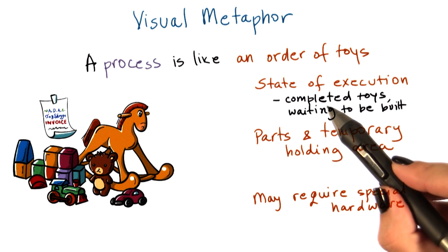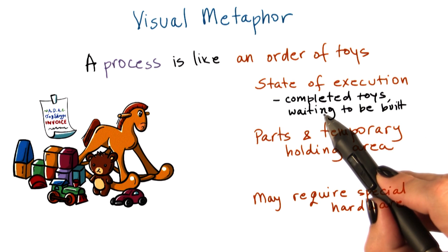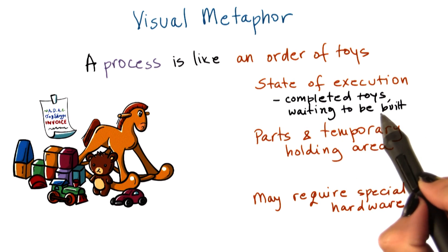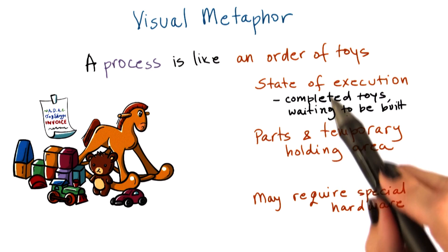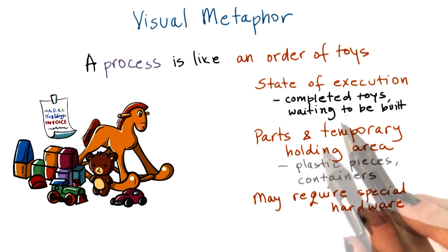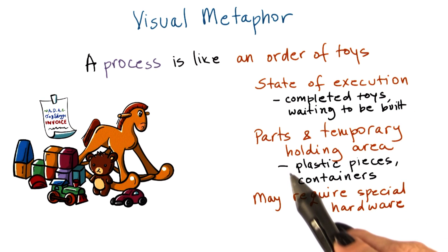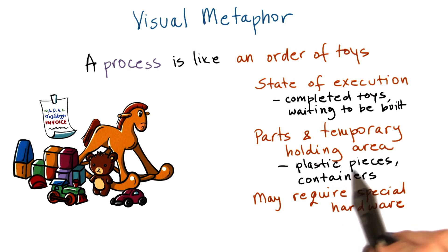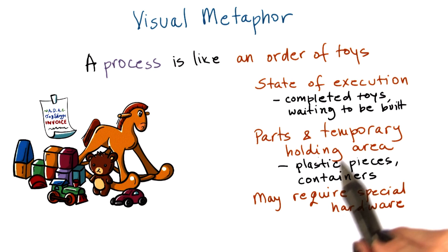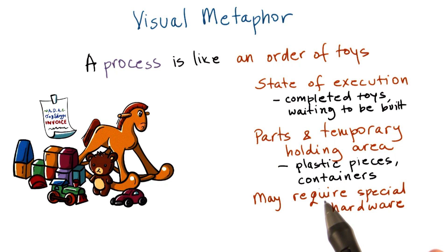For instance, its state of execution may include the completed toys, the toys that are waiting to be built that are part of that order, and other things. Building the toys may require various parts like plastic pieces, wooden pieces, and these come in different containers, or we may require some other temporary holding area for the pieces.